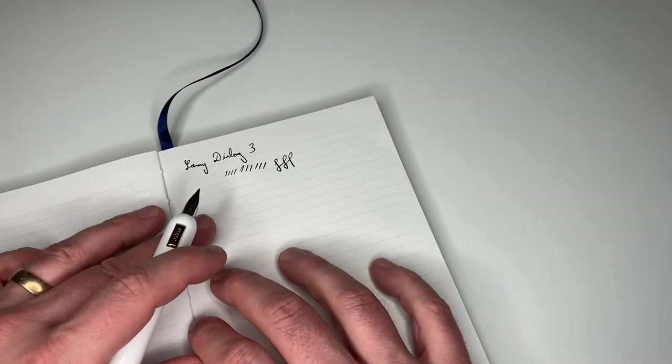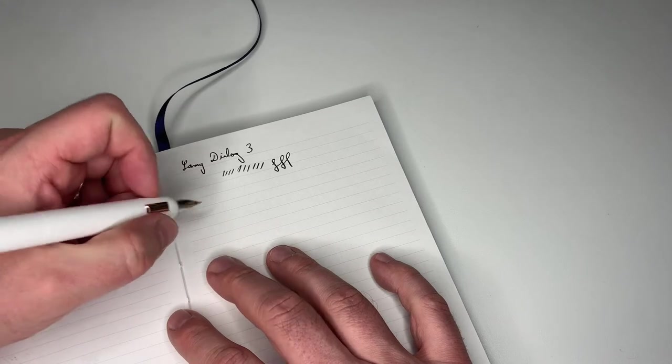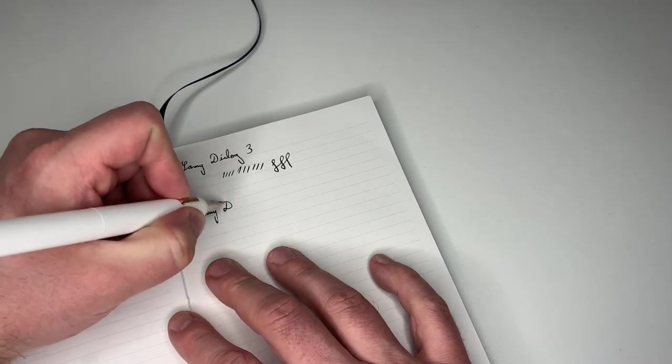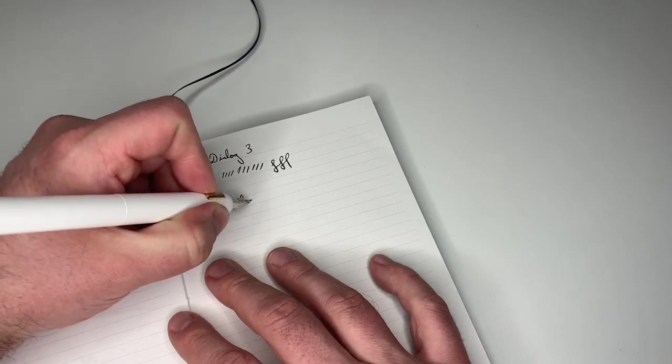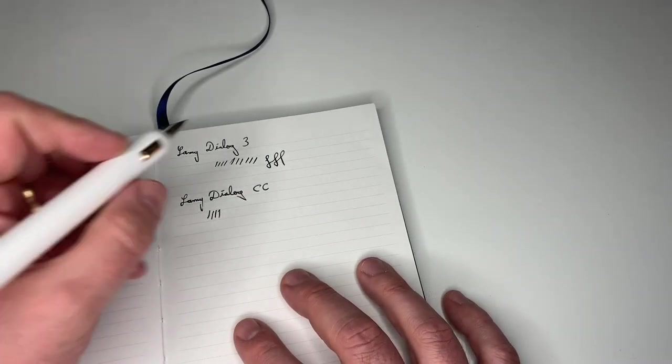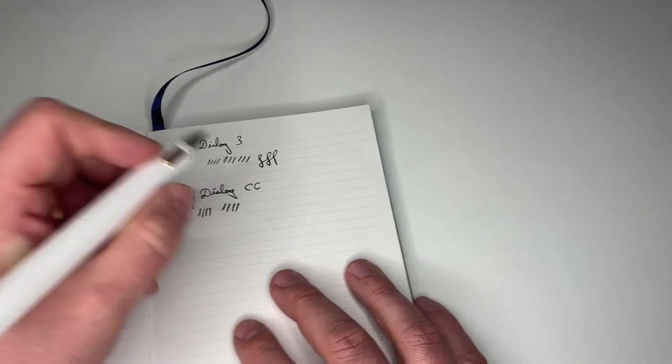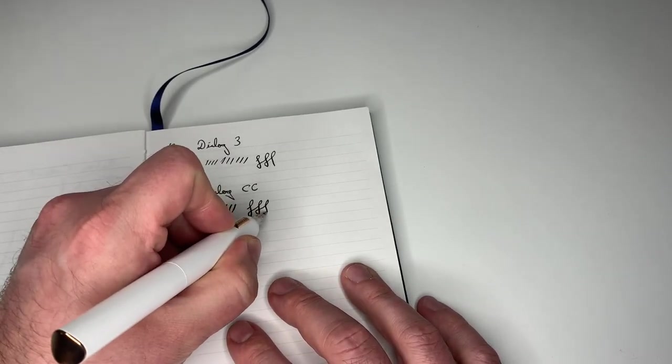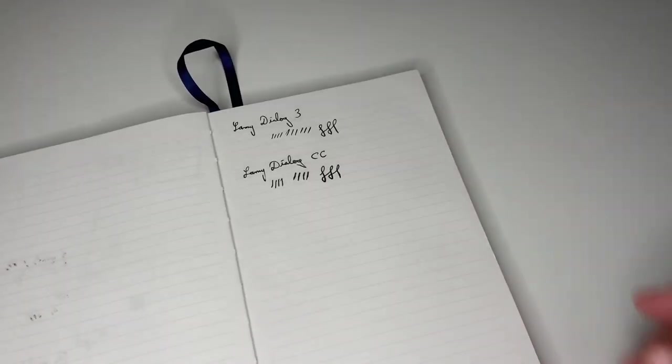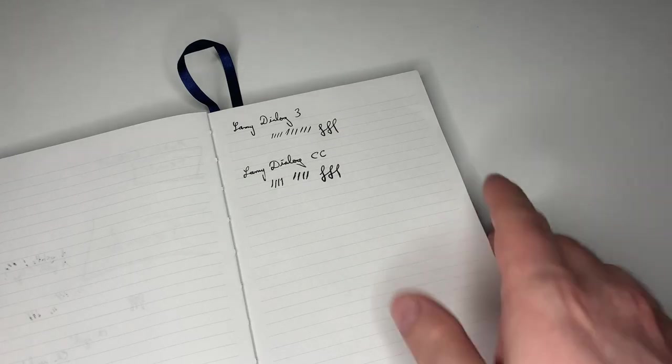This is a fine gold nib. This is the Dialogue CC. You see the same kind of line variation characteristic that this pen exhibits. Under pressure you get quite a bit of line variation. I think it's one of the most pronounced line variations that you can get in modern gold nibbed pens.